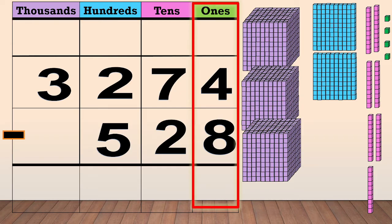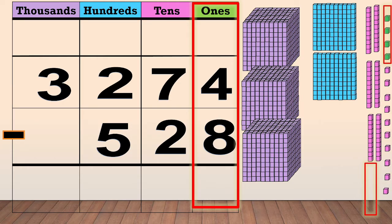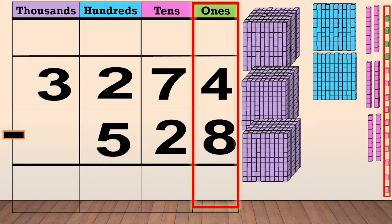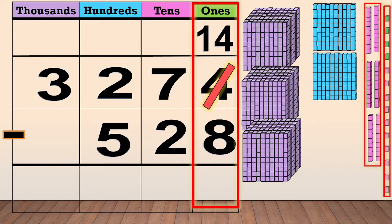First, we subtract the ones: 4 minus 8. We cannot subtract 8 from 4, so we need to regroup 1 ten into 10 ones. Now we have 14 ones. We cross out the 7 and write 6 at the top.